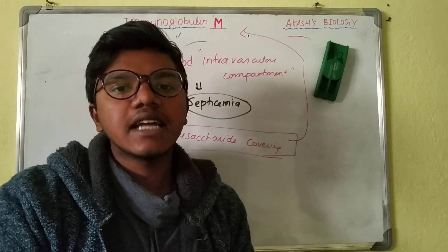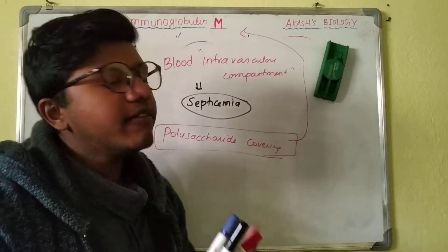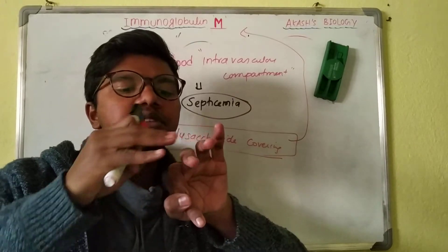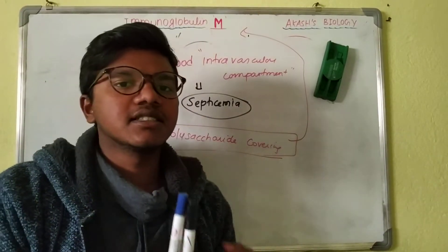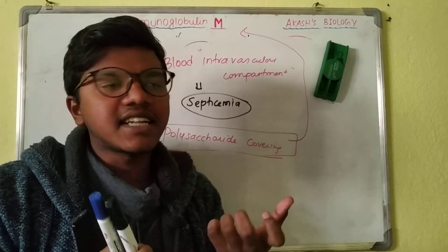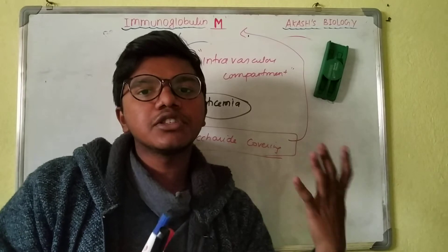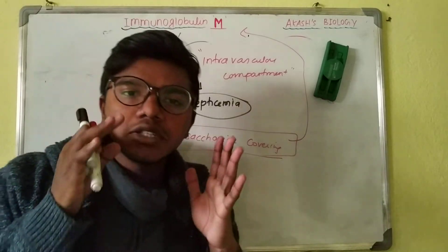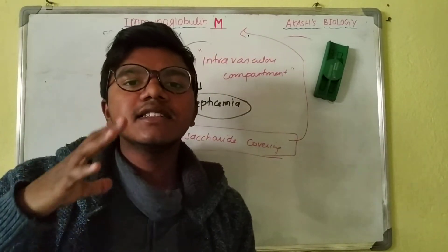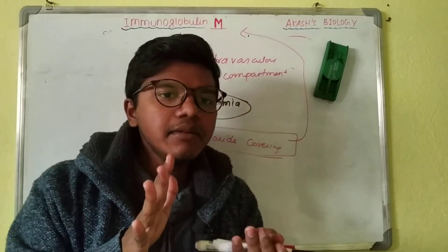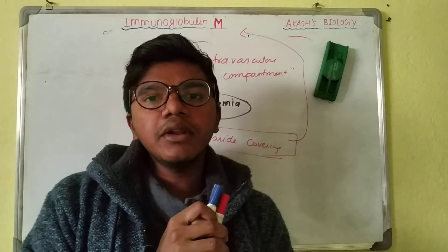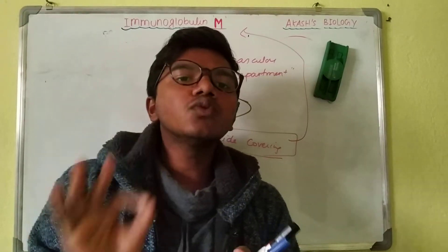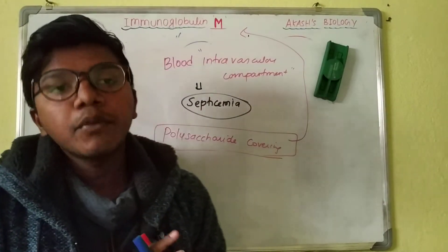IgM has the highest avidity among all immunoglobulins. Avidity means that when one part of the antibody attaches to one antigen, it enhances the capacity of other binding sites to attach to more antigens. Since IgM has 10 antigen-binding sites, it has maximum avidity. It has the highest molecular weight, so it cannot enter tissues and remains confined to the intravascular compartment. It is equivalent to 1000 IgG molecules in immune hemolysis, making it 1000 times more active than IgG.